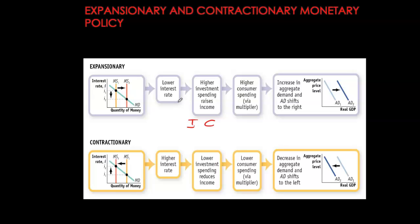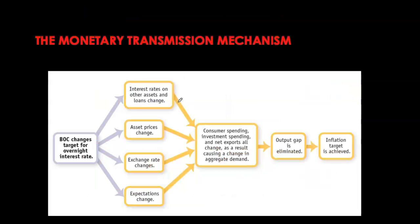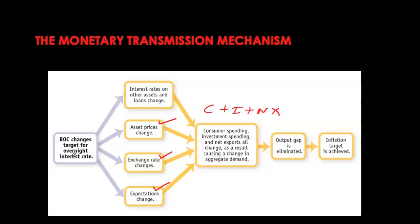What we have seen so far is a simplified version of monetary policy. The monetary policy transmission mechanism is actually quite more complex. Monetary policy comes into effect not just through interest rate changes, but also through asset prices like stocks and bonds. In a flexible exchange rate regime, changes in interest rates by the Bank of Canada affect the value of the Canadian dollar. It also affects expectations about future inflation and future GDP growth, all of which impact consumption, investment, and net exports — the components of aggregate demand.